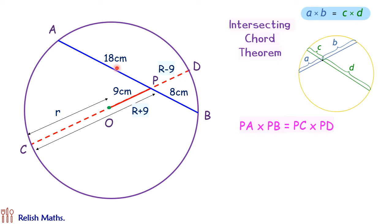Putting these values, PA is 18 and PB is 8. This equals PC, which is R plus 9, and PD is R minus 9. Simplifying it further,